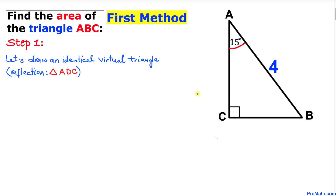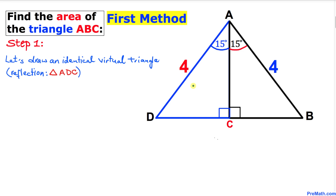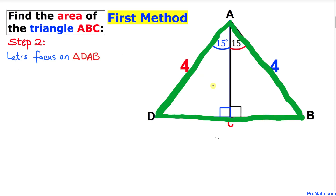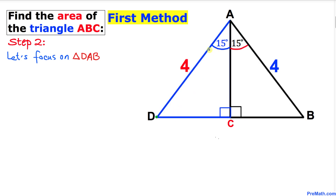Here's the very first method. We are going to think outside the box. In the first step, let's draw an identical virtual triangle on this side that is going to be a reflection of triangle ABC. Let me put a point D over here. This gives us a much nicer looking diagram, and this reflected triangle looks exactly like the original on the other side.